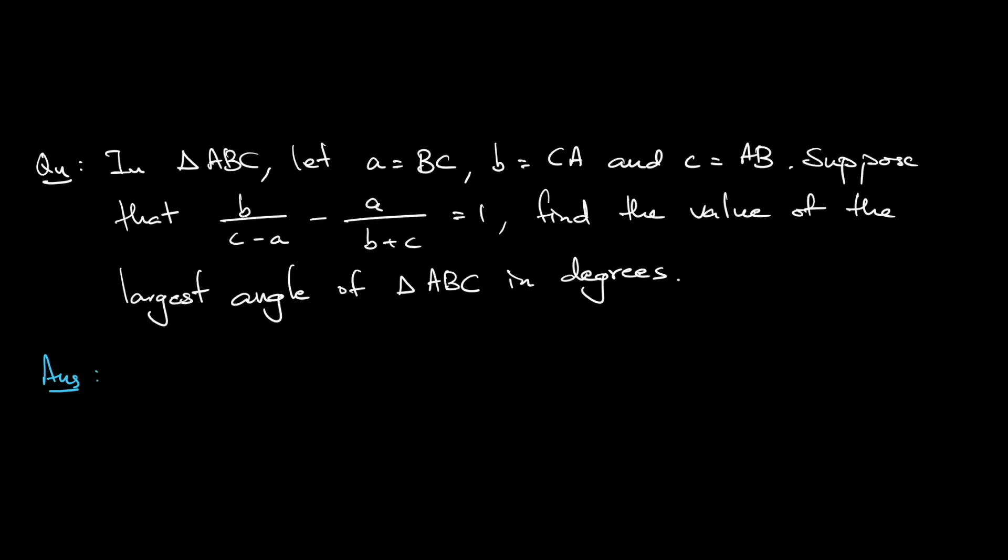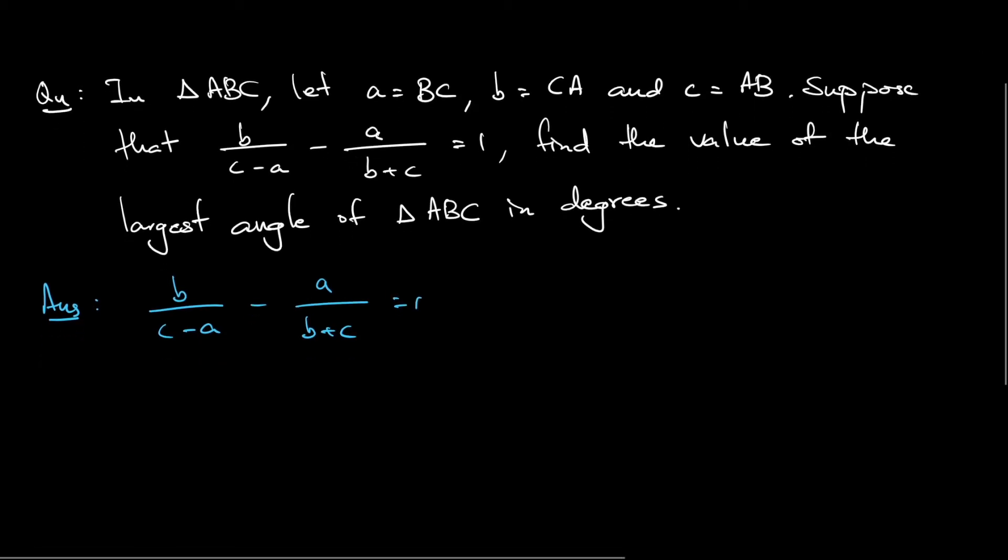Starting from the conditions given, b/(c-a) - a/(b+c) = 1. Okay, try to rearrange this. Alright, so I can have b multiplied by (b+c) minus a multiplied by (c-a).